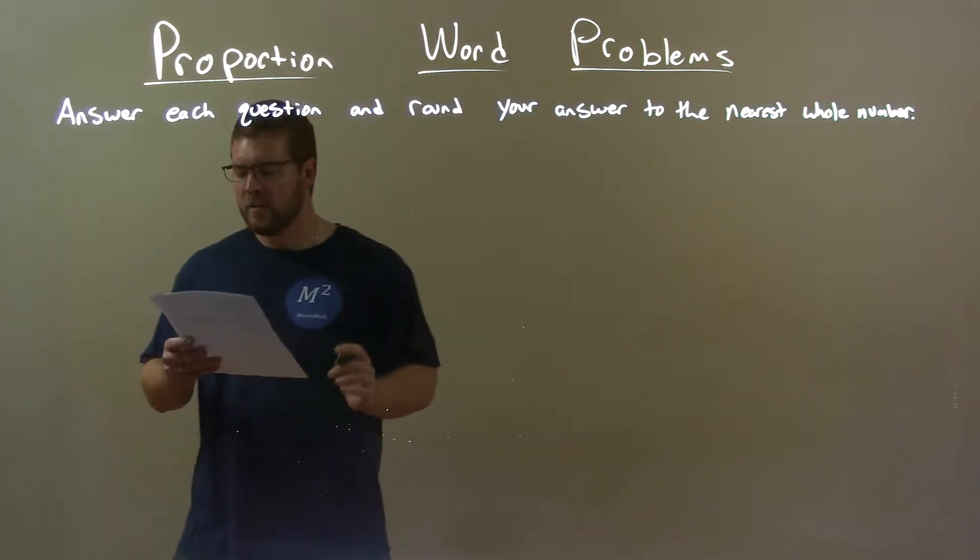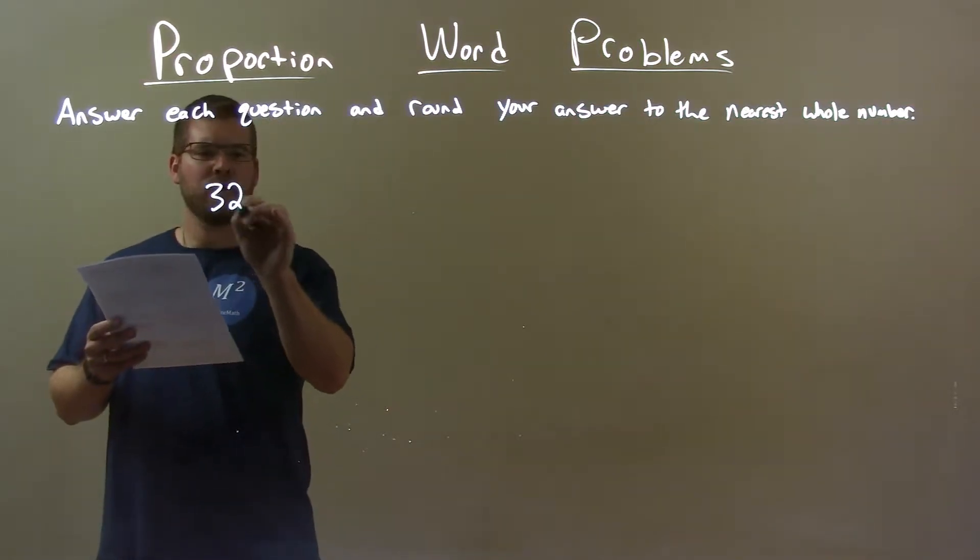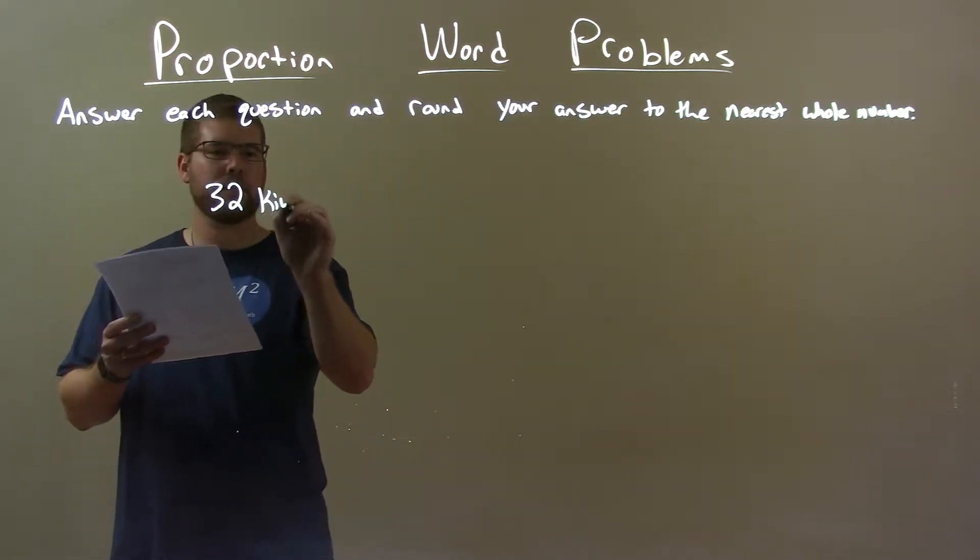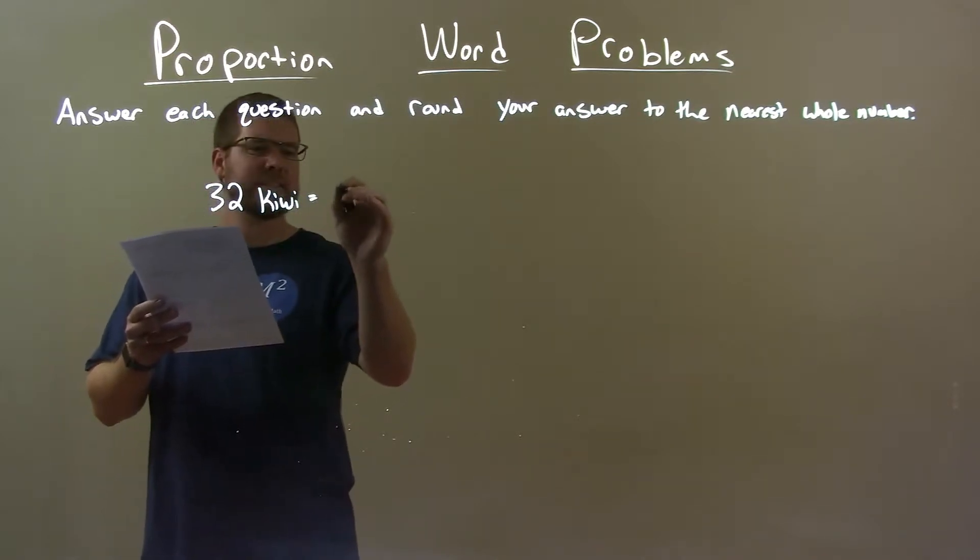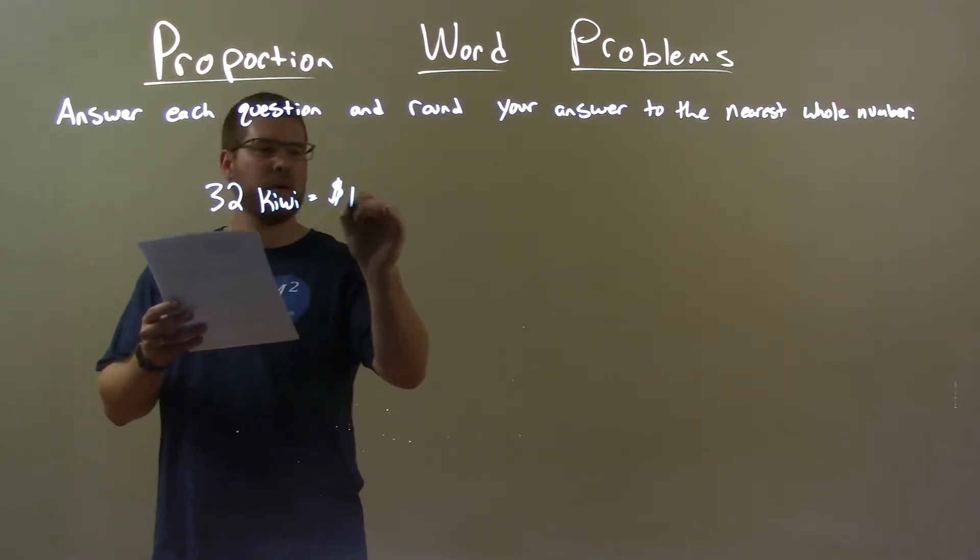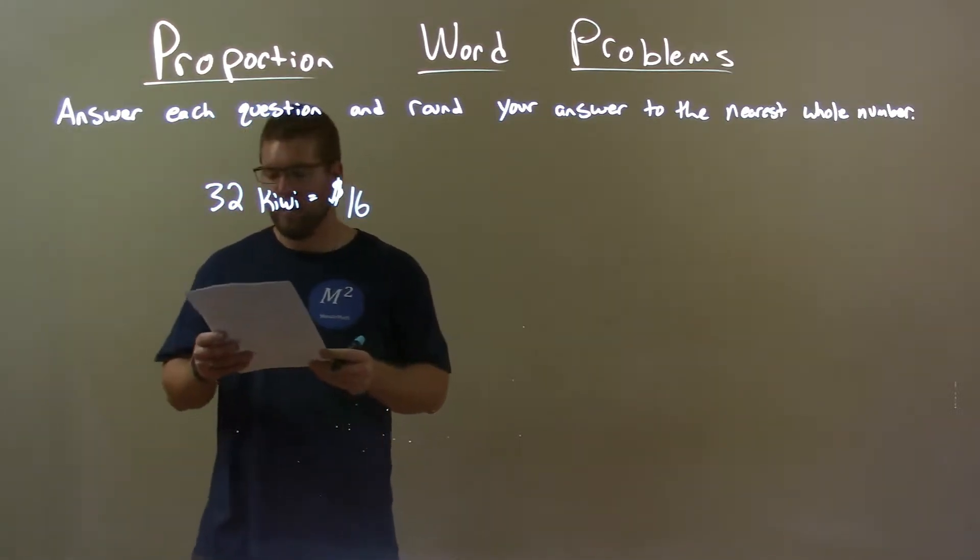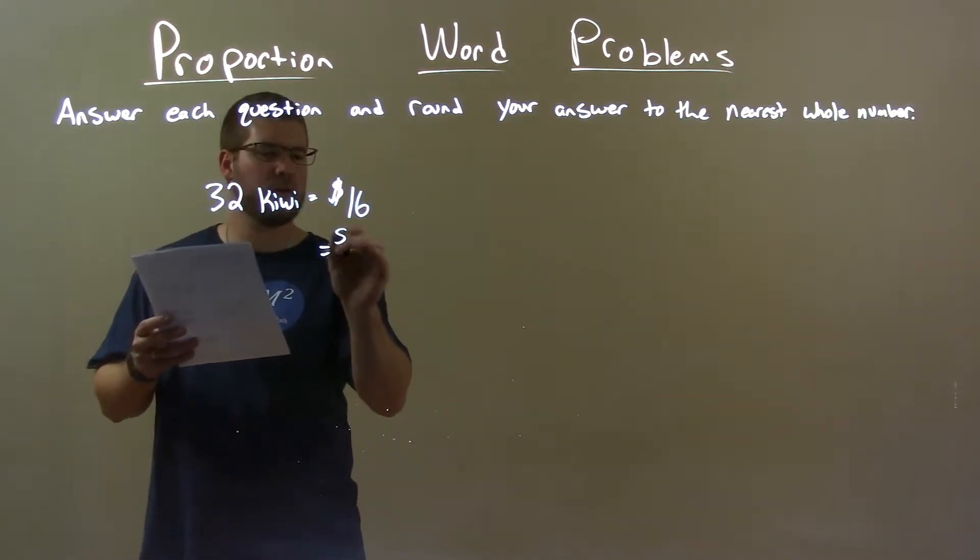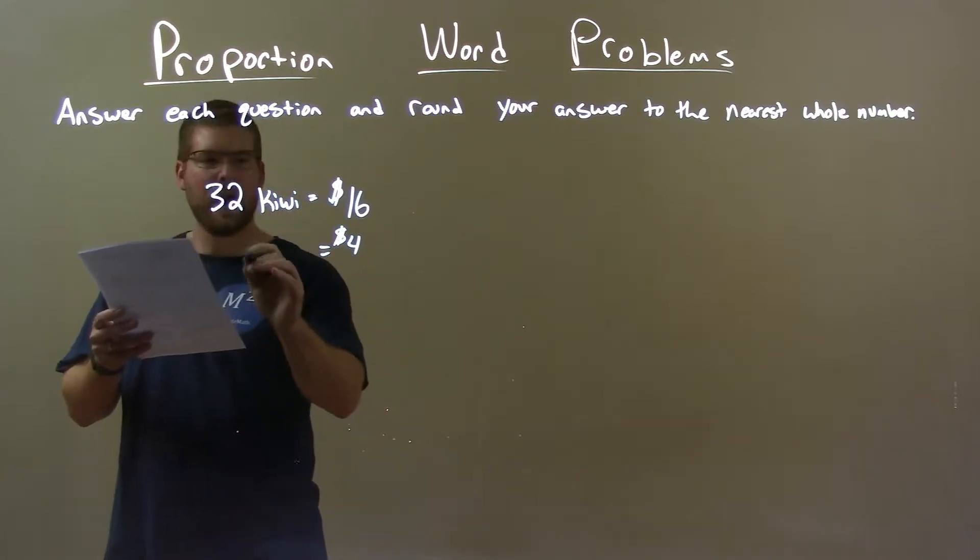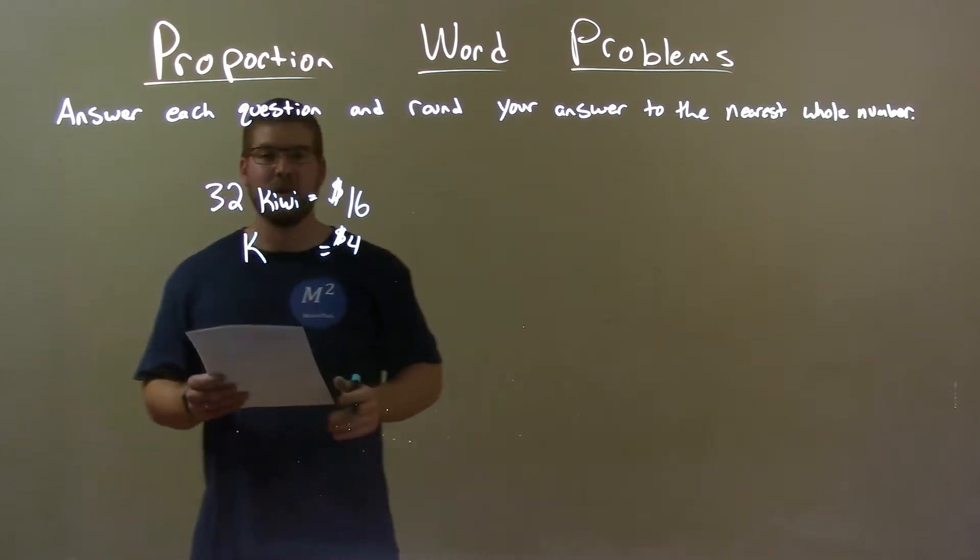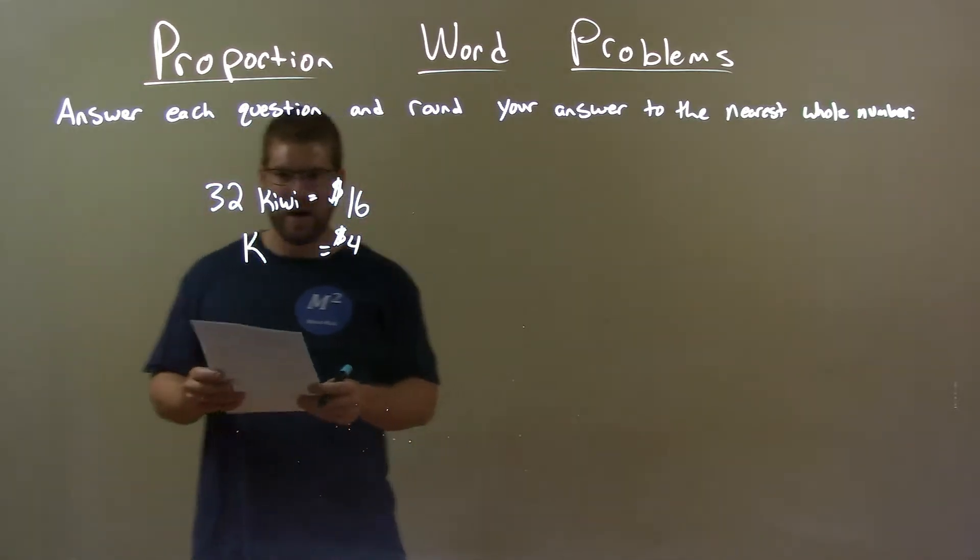Alright, so we know that Jasmine bought 32 kiwi for $16. So 32 kiwi here is equal to $16. Now Lisa wants to see how much she can buy with $4. So she has $4 here, and she wants to see how many kiwis she can buy. So let's let the variable k stand for the number of kiwis she wants to buy.